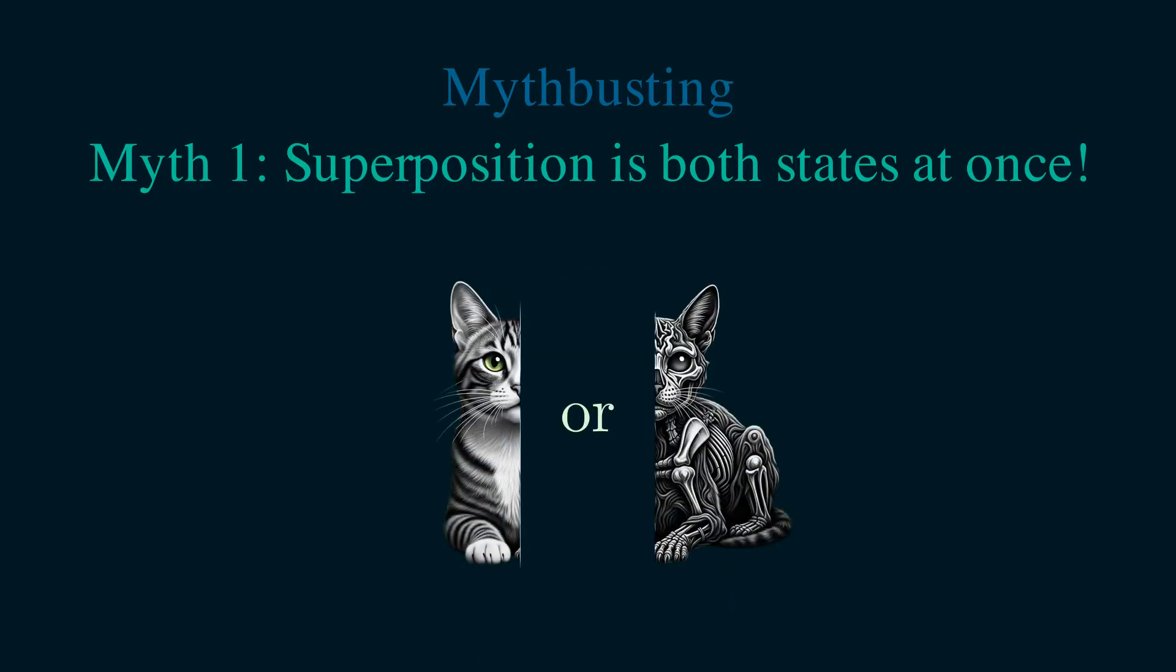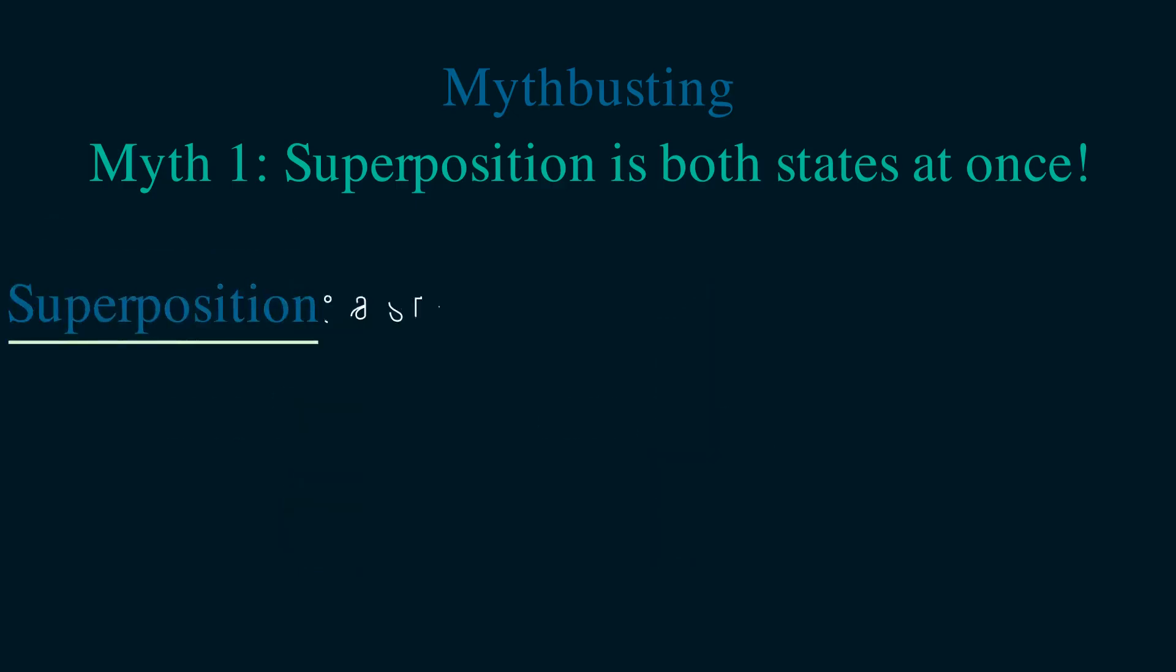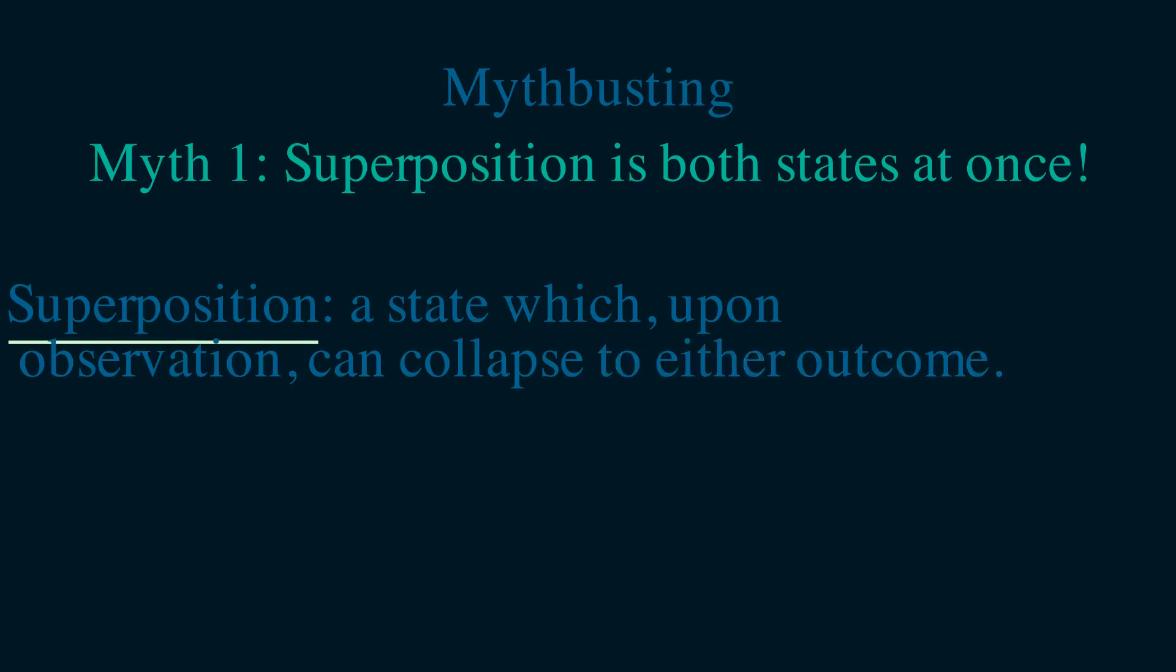But it's also not just one or the other state, because after the measurement, the system truly has the potential to become either outcome. So the correct way to think of superposition is that it is a state which, upon observation, can collapse to either outcome.